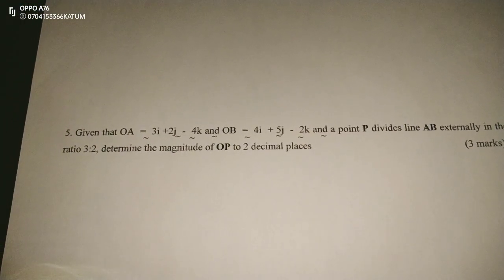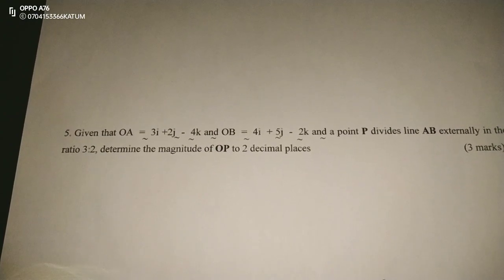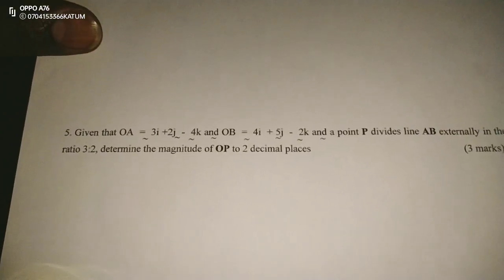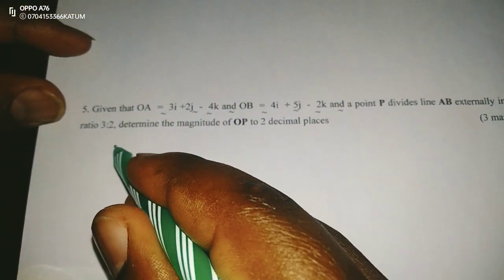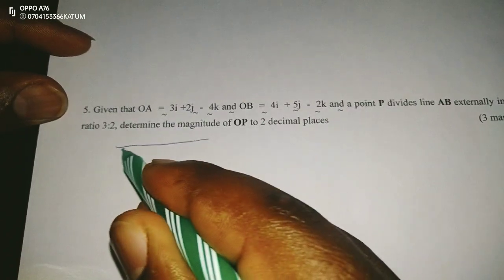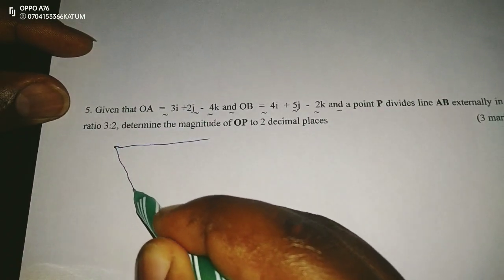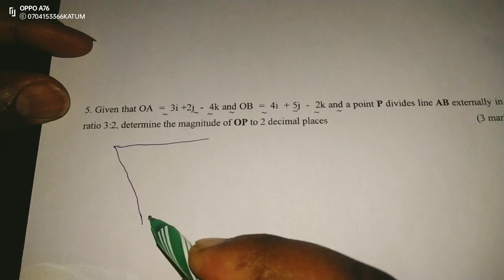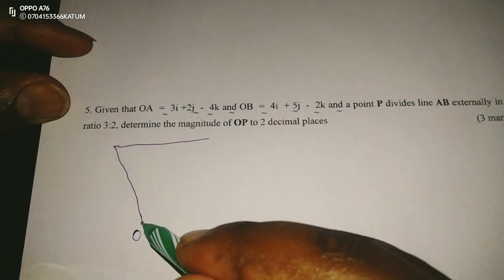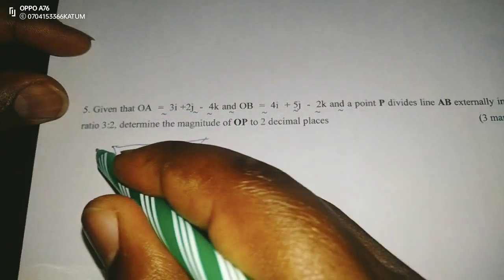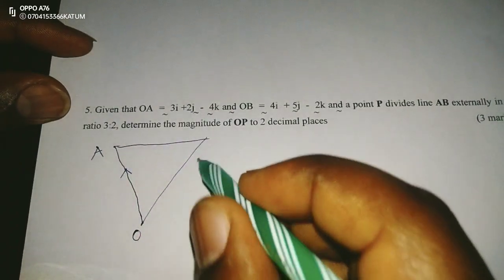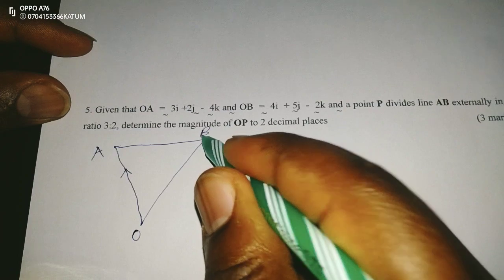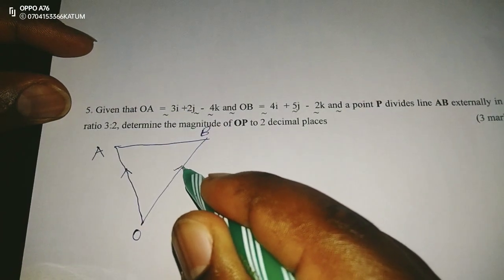Let me first of all sketch the positions of these two, the positions of the three points here in the vectors. So we're going to have, assuming the origin is here, assuming this is the origin O. So we are having A such that this is vector OA, then point B such that this is vector OB from origin.